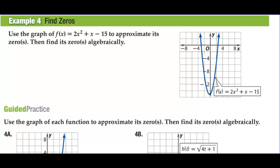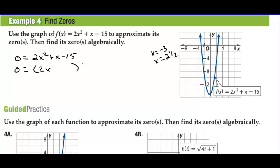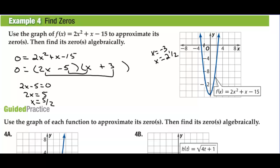Use the graph of f of x to approximate its zeros, then find them algebraically. I estimate them at x equals negative 3 and x equals about 2½. To find the actual zeros, we set the function equal to 0 and factor. We get 2x and x, with plus 3 and minus 5 giving a positive 1 in the middle. So 2x minus 5 equals 0 gives x equals 5/2, which is 2½; and x plus 3 equals 0 gives x equals negative 3.